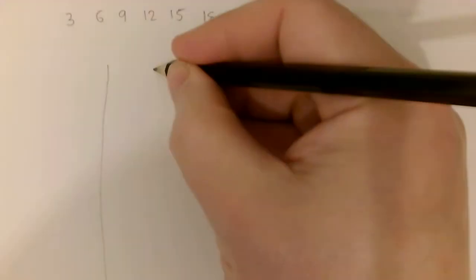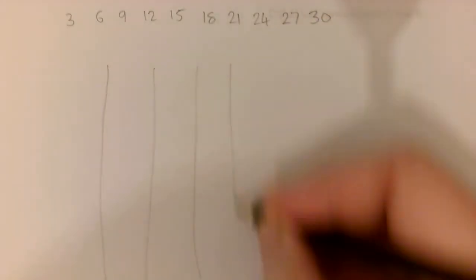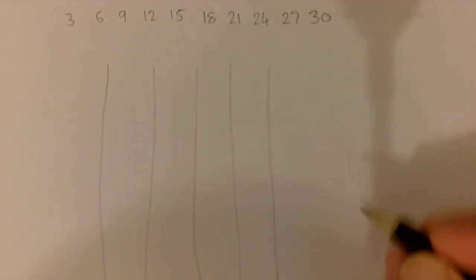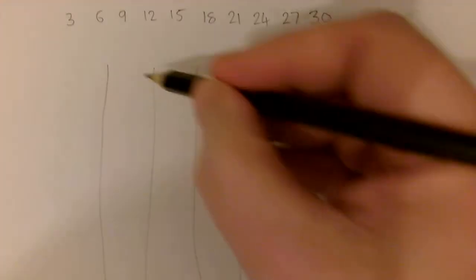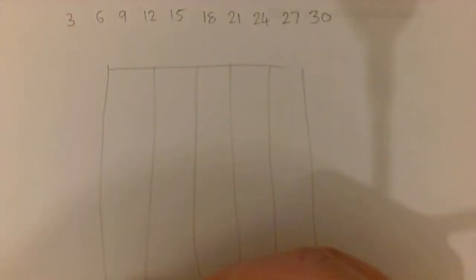Then we need to draw ourselves a grid, or you may decide for your class that you want to have a grid printed off already. I'm not sure what size this grid is going to end up at at the minute. Let's have a look.